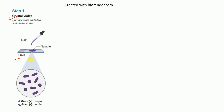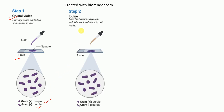By the end of this step, gram positive bacteria appear purple as well as gram negative bacteria also appear purple. In the next step, step number two is the addition of iodine. This mordant makes the dye less soluble so it adheres to the cell wall.